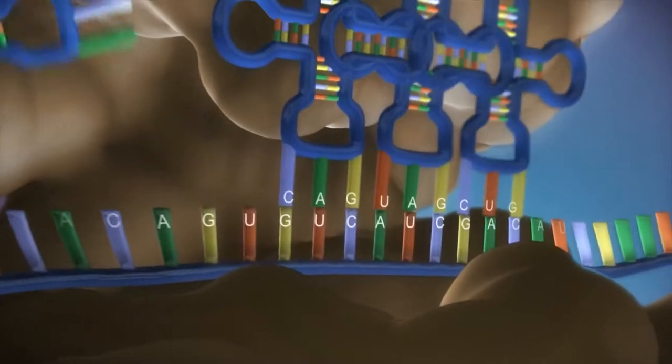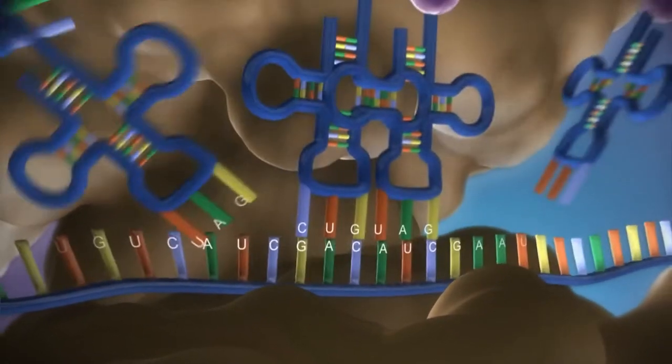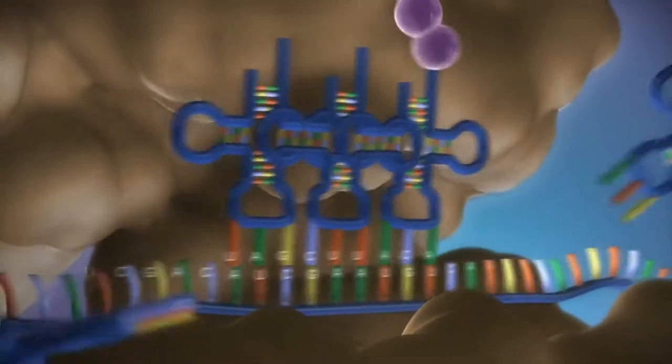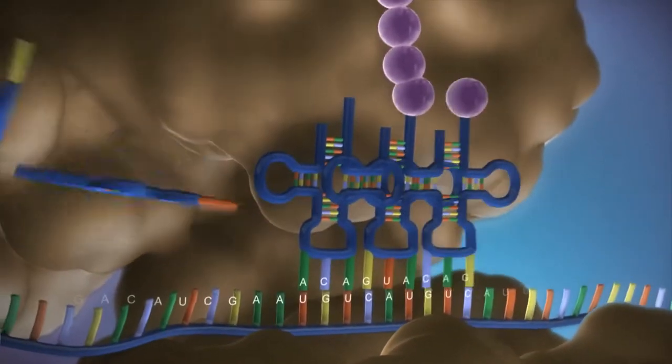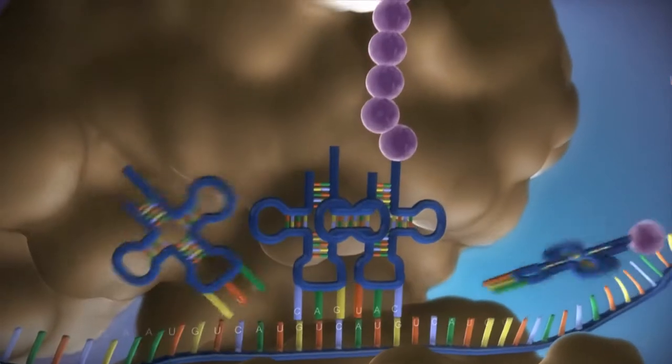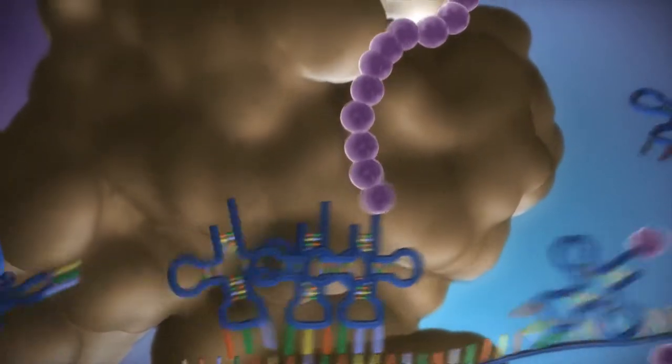The messenger RNA is read three bases at a time. As each triplet is read, a transfer RNA delivers the corresponding amino acid. This is added to a growing chain of amino acids.